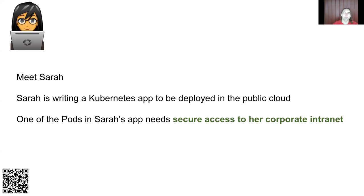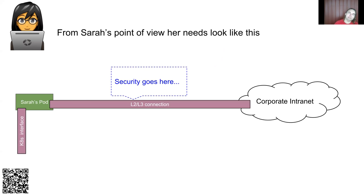So our protagonist — meet Sarah. Sarah is writing a Kubernetes app to be deployed in the public cloud, and one of the pods in Sarah's app needs secure access to her corporate internet. That's a networking requirement. From Sarah's point of view, she has her pod with its existing Kubernetes interface, and she needs something that will give her an L2 or L3 connection back to her corporate internet — with security happening somewhere along there — without needing to know what constitutes security.